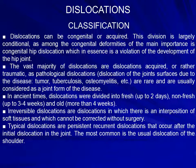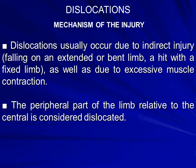Dislocations are divided into: fresh (up to 2 days), non-fresh (up to 2–3 days), and old (more than 3–4 weeks). Irreducible dislocations involve soft tissue interposition and cannot be corrected without surgery. Typical dislocations are persistent, recurrent — the most common being the usual dislocation of the shoulder. Dislocation usually occurs due to indirect injury: falling on an extended or bent limb, or a hit with a fixed limb, as well as excessive muscle contraction. The peripheral part of the limb relative to the central is considered dislocated.